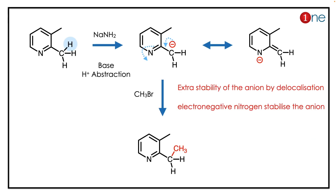You are using a strong base. The base abstracts the proton. The proton abstraction facilities are more, but it abstracts from the side with the bigger group, and it is extra stabilized by nitrogen. Nitrogen is an electronegative atom — it can stabilize the ion, giving it extra stability. That is our nucleophile. Then it attacks, and you have C-C bond formation.